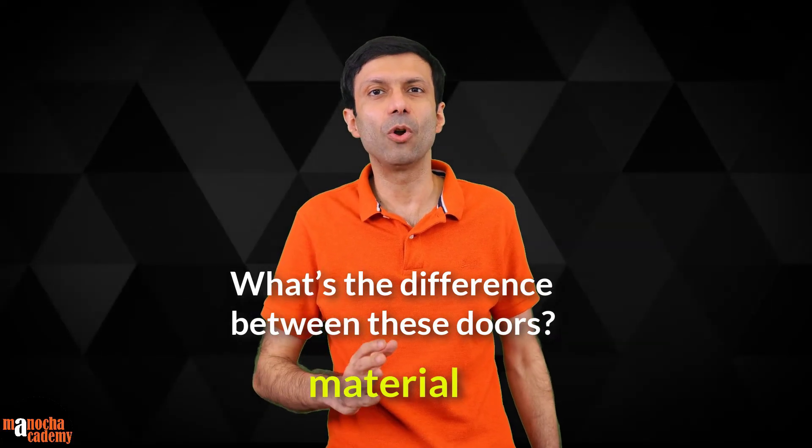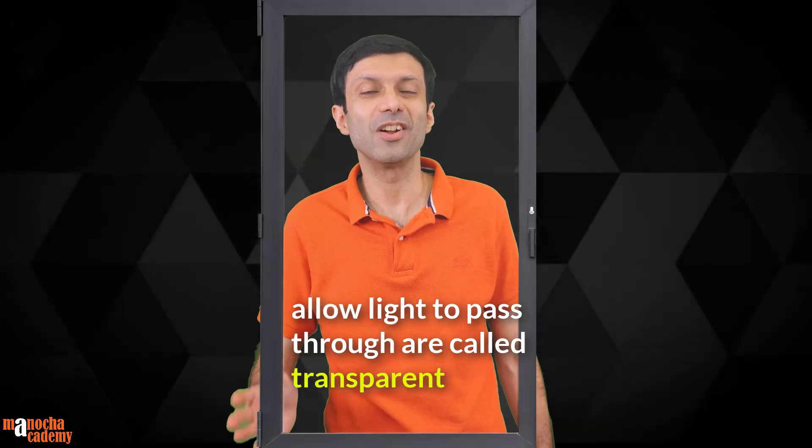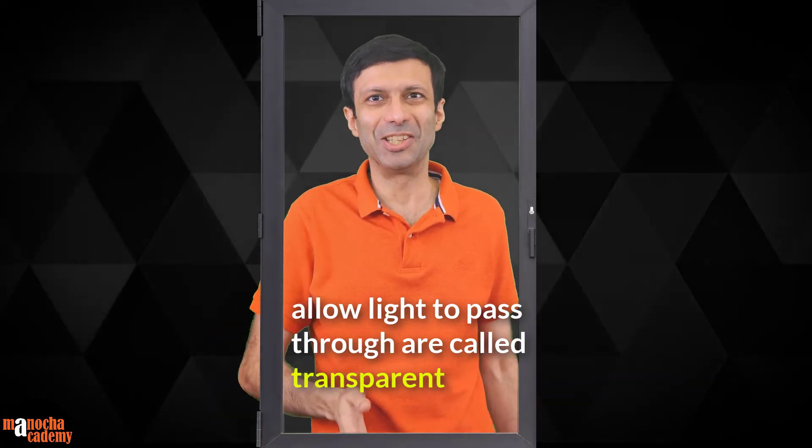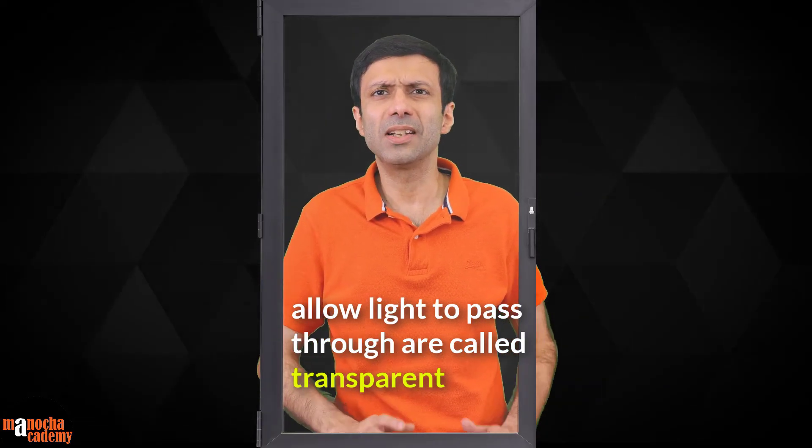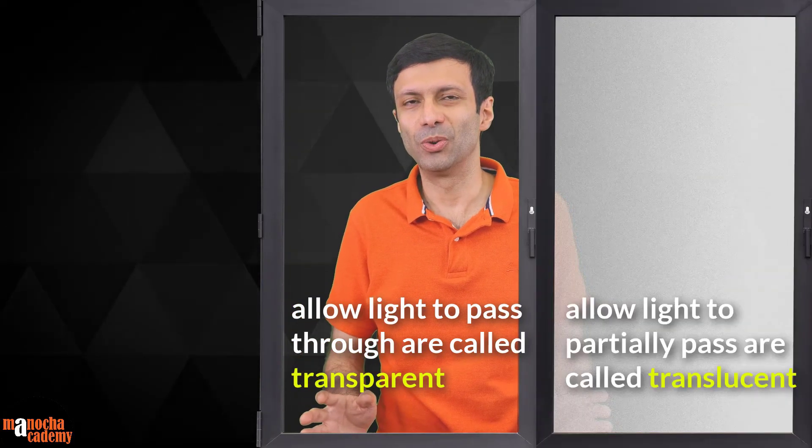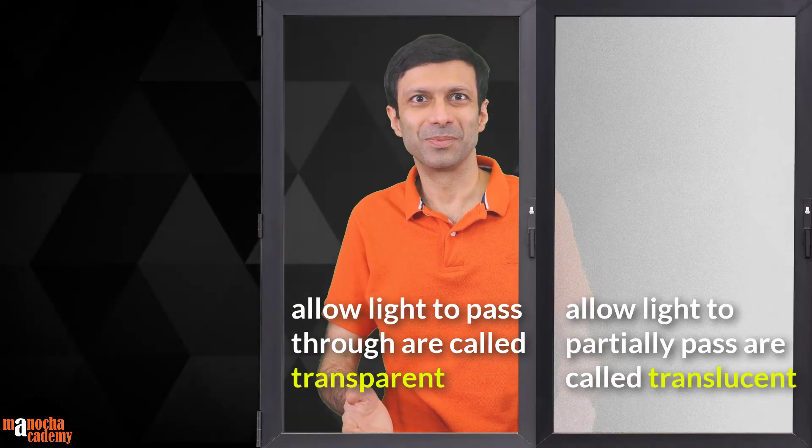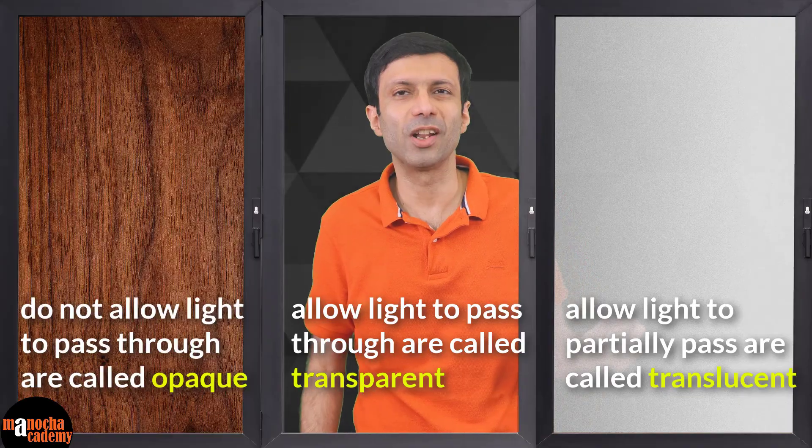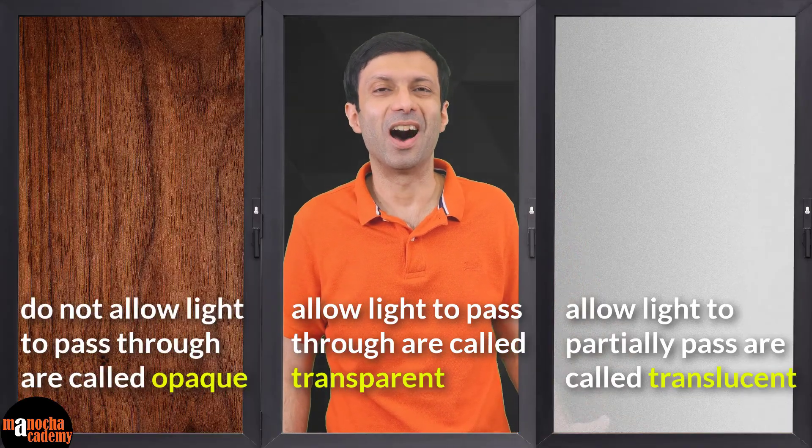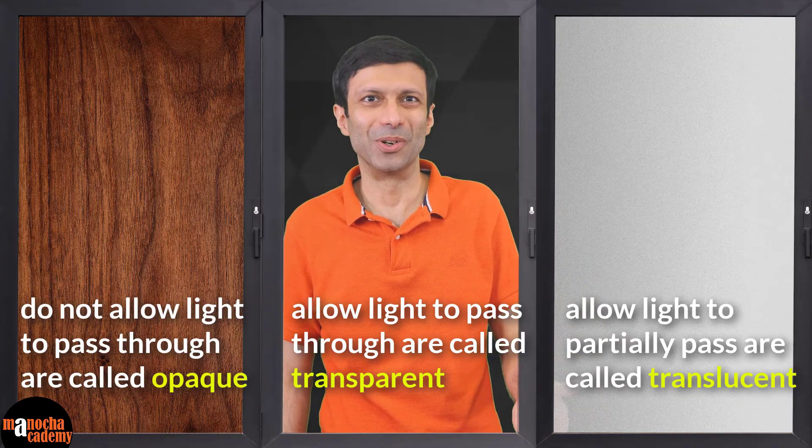The materials that allow light to pass through are called transparent, like this door. The ones that allow light to partially pass through are called translucent, like this door here. And the ones that do not allow light to pass through at all are called opaque, like this wooden door.